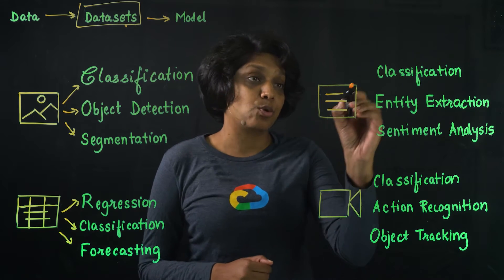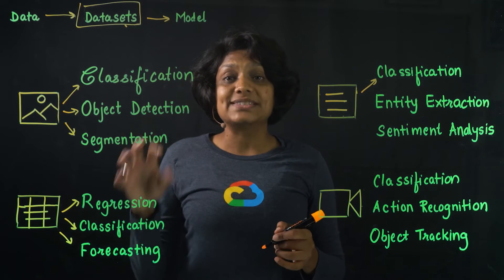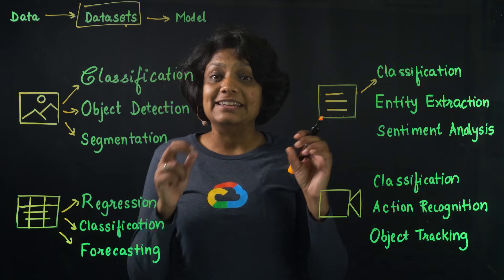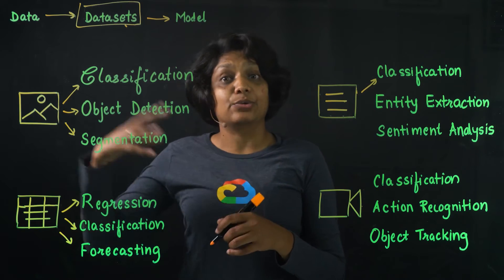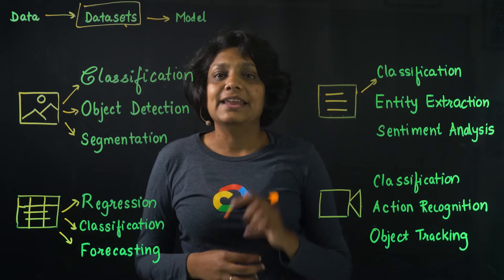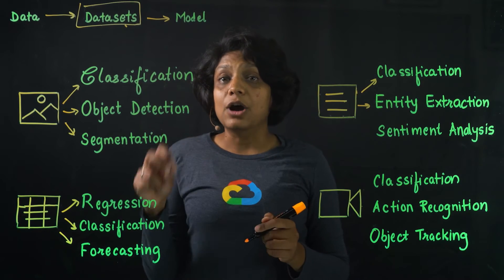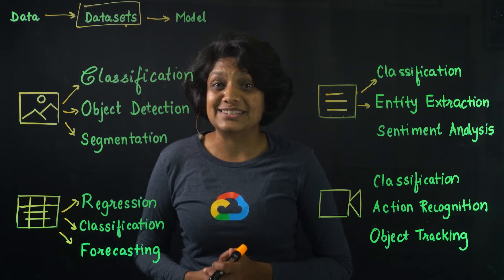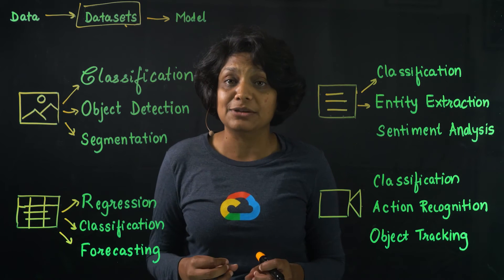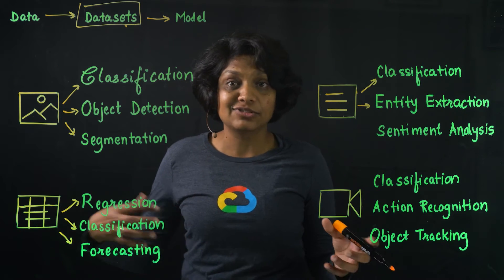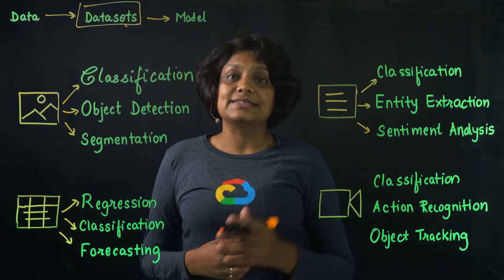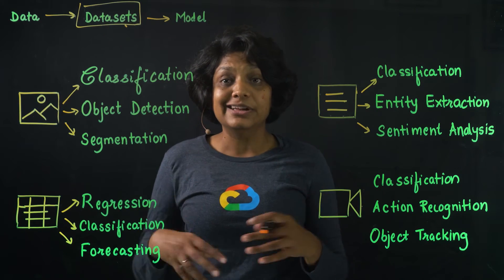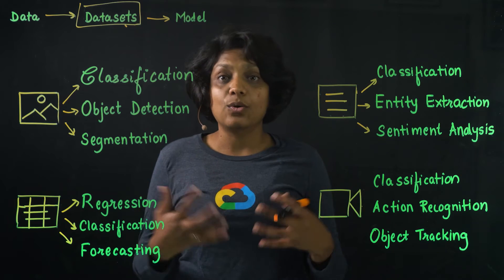Text data sets currently support classification, which is where you assign one or more labels to an entire document. In a customer support example, an email could include classifications like 'great service' or 'a suggestion.' Entity extraction is where the model identifies custom text entities within a document — for example, identifying all phrases in a customer support email that reference pricing, like 'too expensive' or 'great value.' Sentiment analysis is used to understand the overall sentiment expressed in a block of text, such as whether a customer was happy, upset, or frustrated.